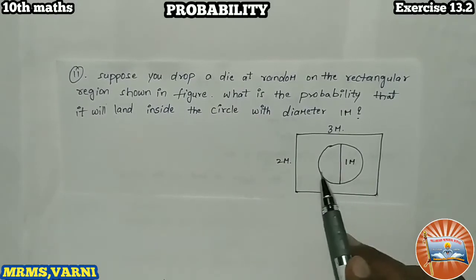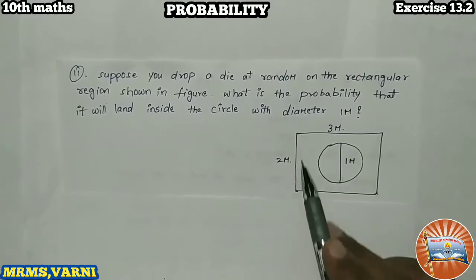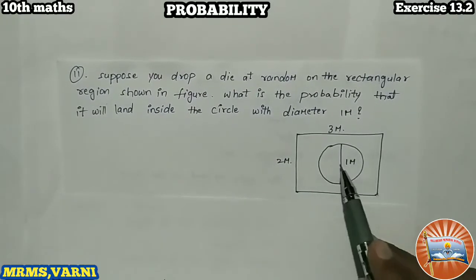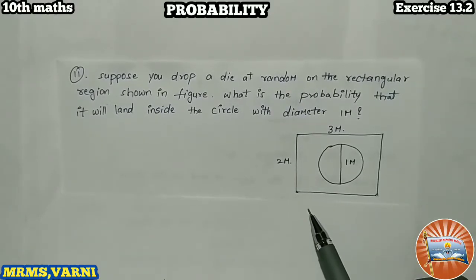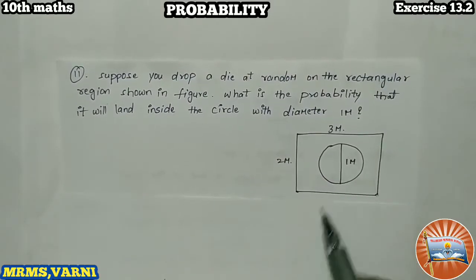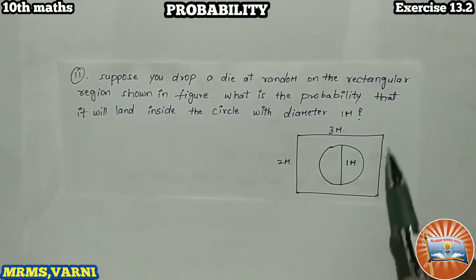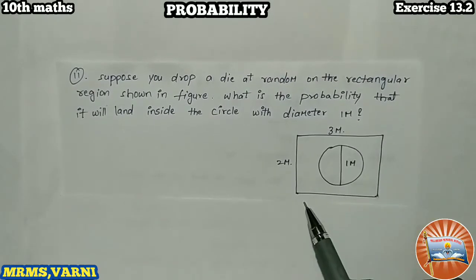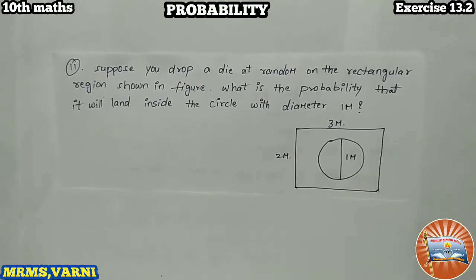What we have to do for that? We have to first calculate the area of the circle as well as the area of the rectangle. Our favorable area is the circle region and the total area is this rectangular region. Let us find the area first.